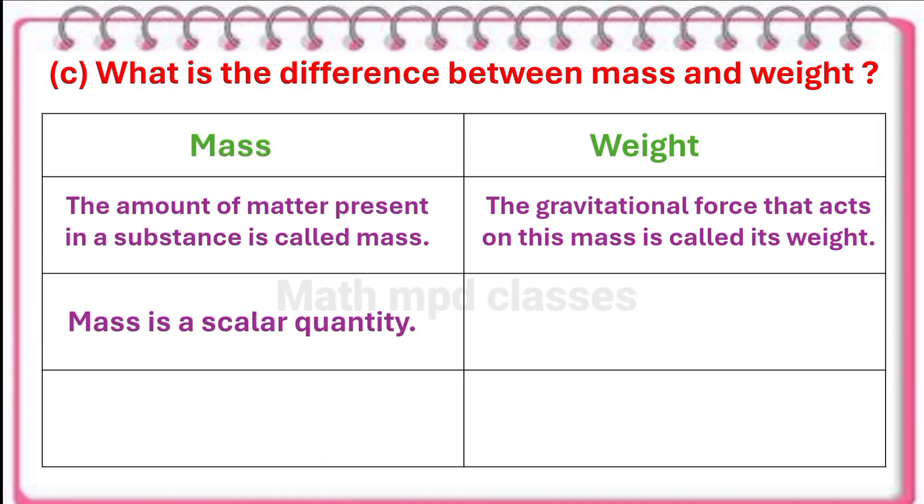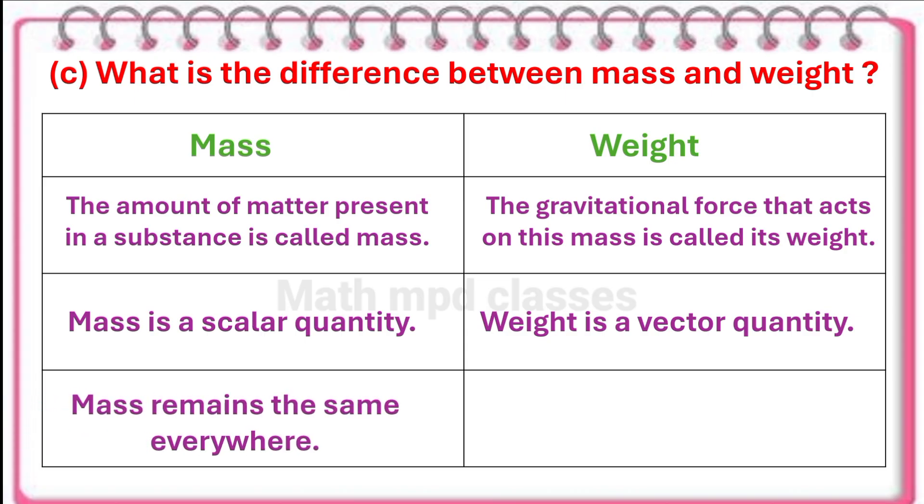Second point: mass is a scalar quantity and weight is a vector quantity. Mass remains the same everywhere, and the weight may differ in different places and in different conditions.